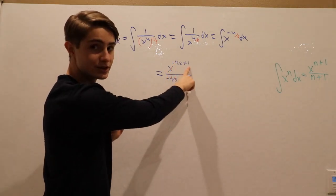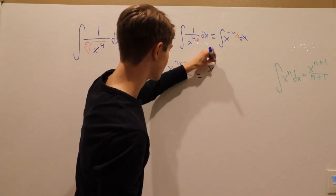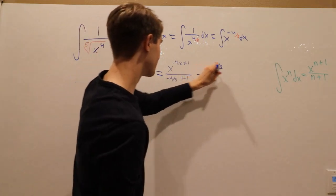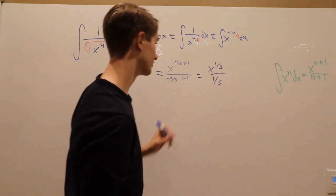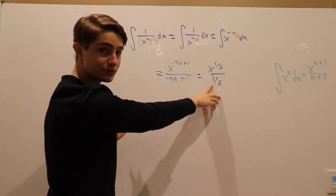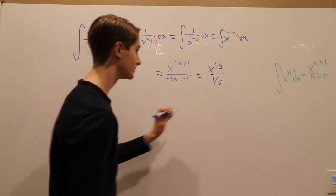So we have x to the one-fifth, and then we can do the same thing on the bottom here. This is going to give us over one-fifth. And the last thing we can do, because we have a one-fifth on the bottom, we can bring that to the top, which gives us